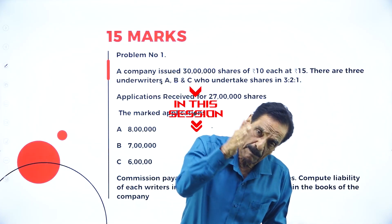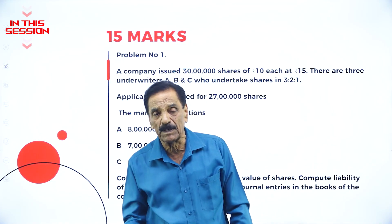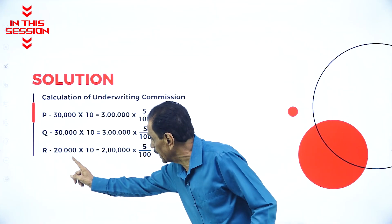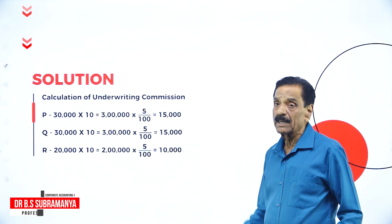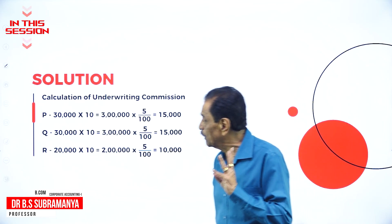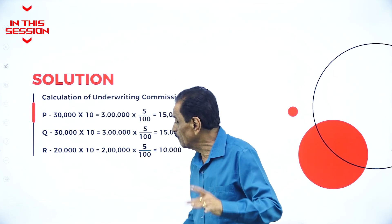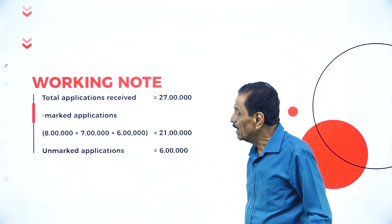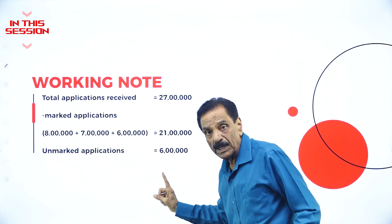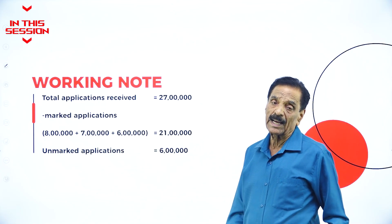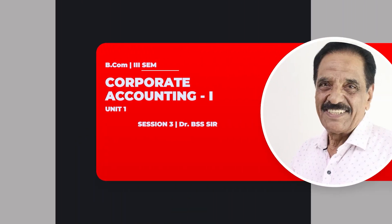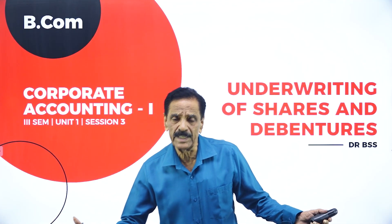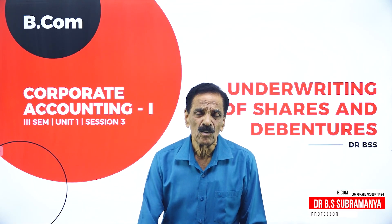Total application contains either marked application or unmarked application, so total application is equal to marked application plus unmarked application. 20,000 into 10 is 2 lakh; 500 is 10,000 — this is the commission payable to P. Commission payable to Q, commission payable to R. Of the total application received of 27 lakh, marked applications are 21 lakh, leaving 6 lakh as unmarked application.